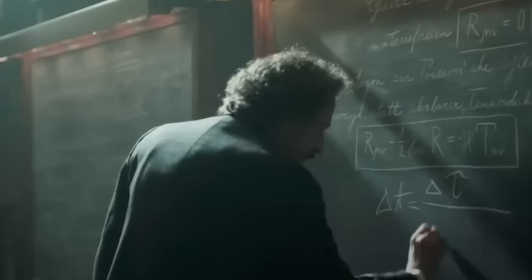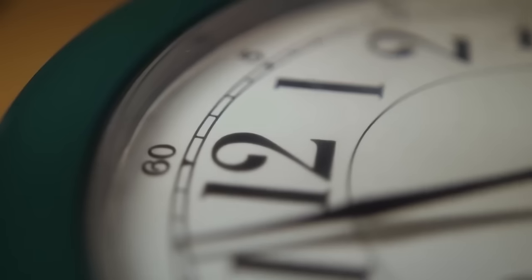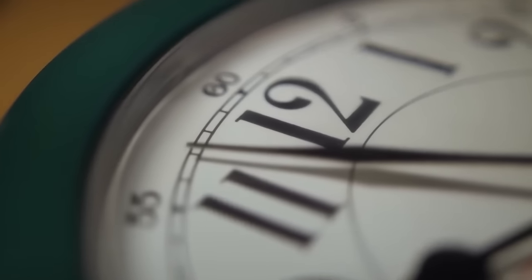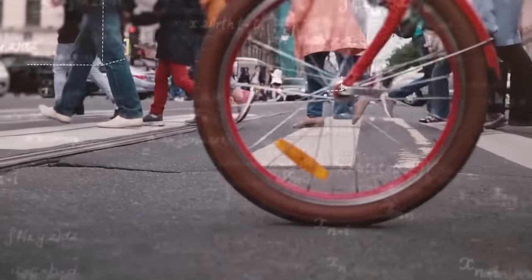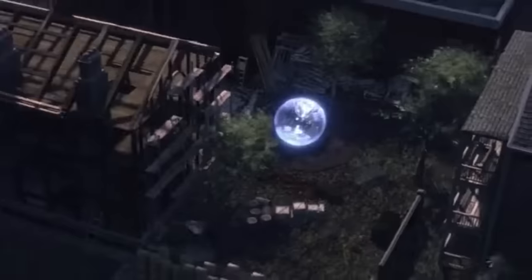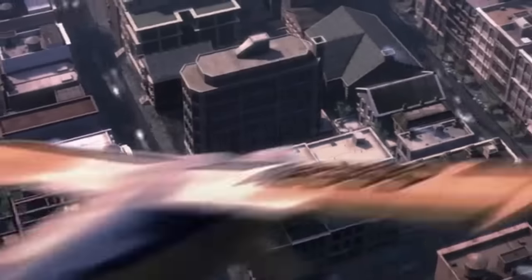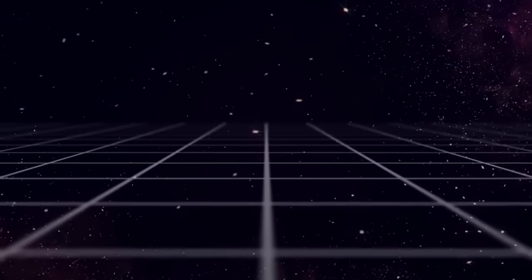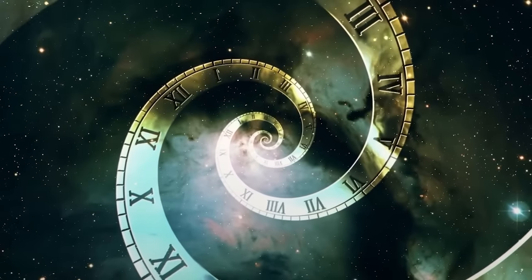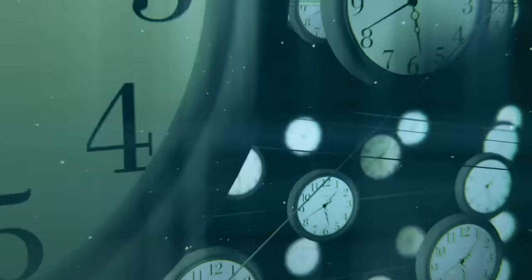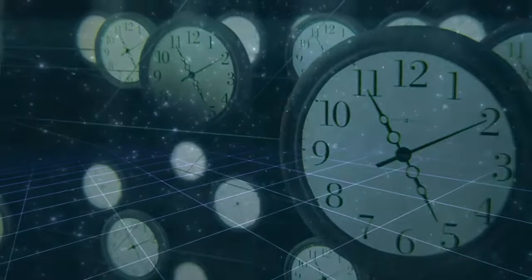According to general relativity, wormholes could exist in two forms, traversable and untraversable. Traversable wormholes would allow for travel through them, while untraversable wormholes would collapse before anything could pass through them. The existence of traversable wormholes would have profound implications for our understanding of the universe and the possibility of interstellar travel. They could provide a shortcut across vast distances, making it possible to travel to distant stars and galaxies.